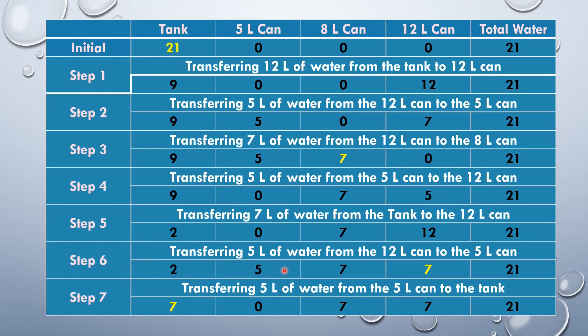Finally, Step 7: Transfer 5 liters of water from the 5 liter can to the tank. Now we have 3 portions each of 7 liters as per the requirement.